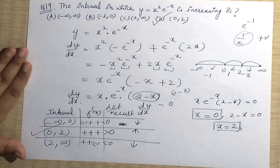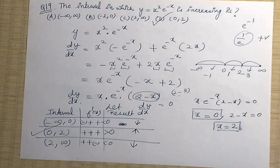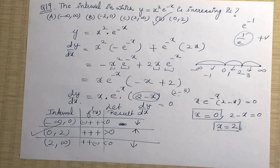So the answer to question 19 is option D — the interval (0, 2). I hope I've explained Exercise 6.2 completely and clearly. Thank you students for watching this video. Please like, share, and subscribe to my channel. In the next video we'll start Exercise 6.3.